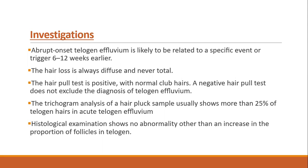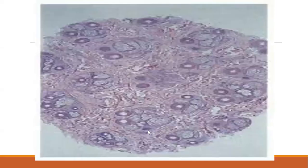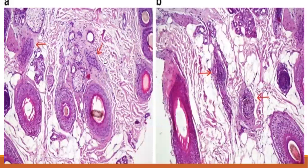Investigation: abrupt onset telogen effluvium is likely related to a specific trigger event 6 to 12 weeks earlier. Hair loss is always diffuse and never total. Hair pull test is positive with normal club hairs (telogen hairs); however, a negative hair pull test does not exclude the diagnosis. Trichogram analysis of a hair pluck sample shows more than 25% telogen hairs among the pulled hairs. Histological examination shows no abnormality other than an increased proportion of follicles in the telogen phase.